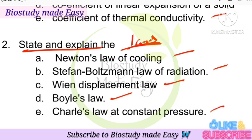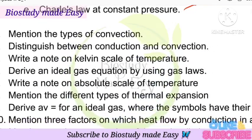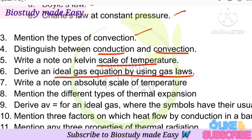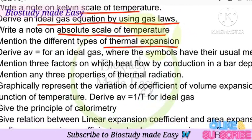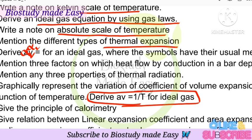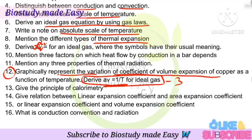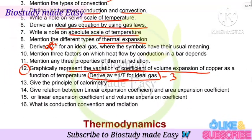Other questions from this chapter: types of convection, distinguish between conduction and convection, write a note on Kelvin scale of temperature, derive the ideal gas equation using gas laws, note on absolute scale of temperature, mention different types of thermal expansion. Derive that the coefficient of volume expansion alpha_V is equal to 1/T for an ideal gas. Graphically represent the variation of coefficient of volume expansion of copper as a function of temperature.